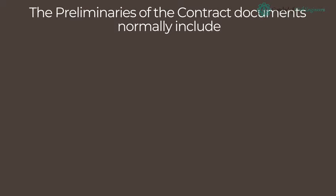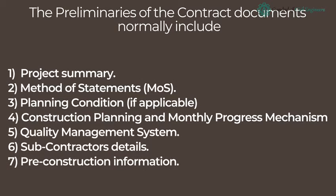The preliminaries of the contract documents normally include: project summary, method of statements, MOSE, planning condition (if applicable), construction planning and monthly progress mechanism, quality management system, subcontractors details, and pre-construction information.